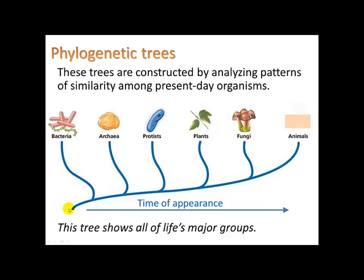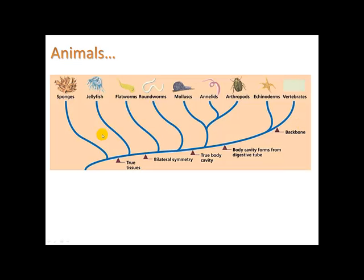This phylogenetic tree shows a history of where these different kingdoms may have branched off from each other. Zooming in on animals, we can see they break into sponges, jellyfish, flatworms, roundworms, mollusks, annelids, and vertebrates. According to this phylogenetic tree, vertebrates branched off from other life forms most recently, and they have a backbone.